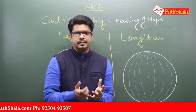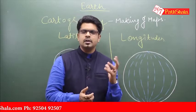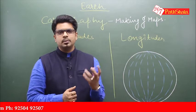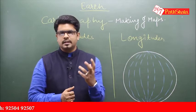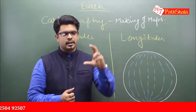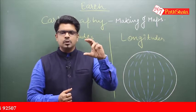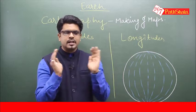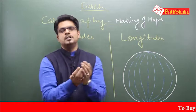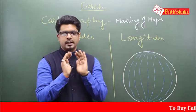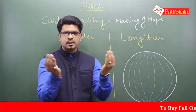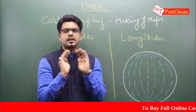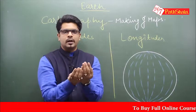Actually, the earth's shape is geoid — it is not spherical. Geoid means it is like a narangi (orange), which has a little bit of a flattening at the poles and is bulging outward, and the biggest circumference is at the equator.